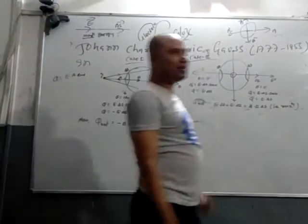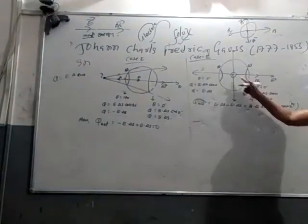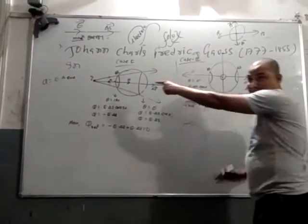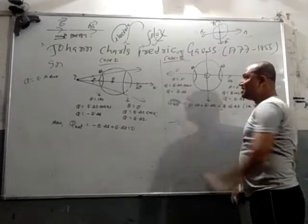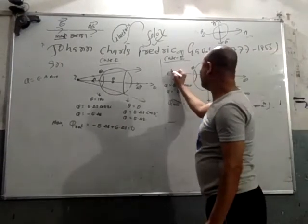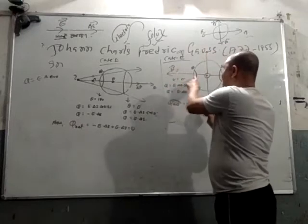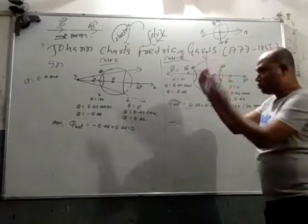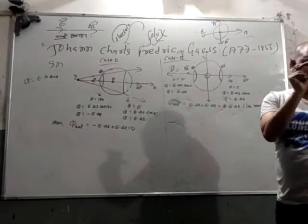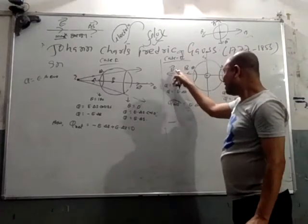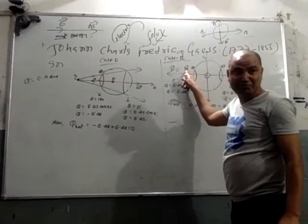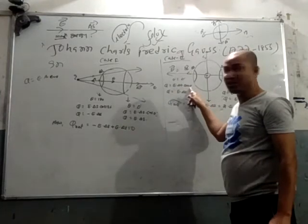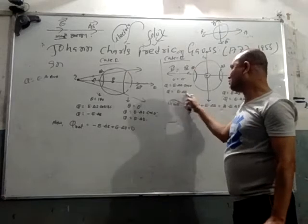Now let us consider the charged particle kept inside the surface. Here the direction of area on the left side: the direction of field and the direction of surface area are both in the same direction. Since total surface area is S, we consider a small surface area dS. So the direction of field and direction of surface area are the same — theta will be 0. So net flux will be E·dS.